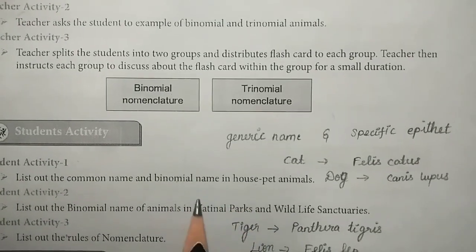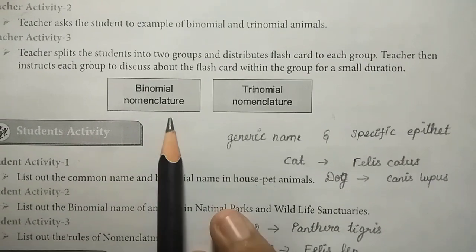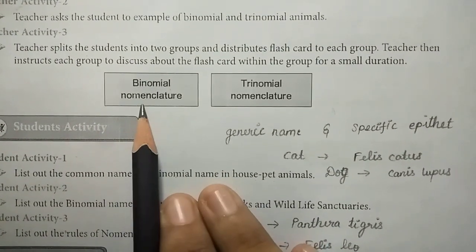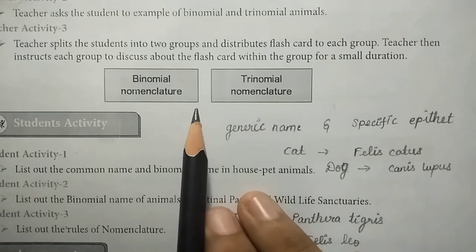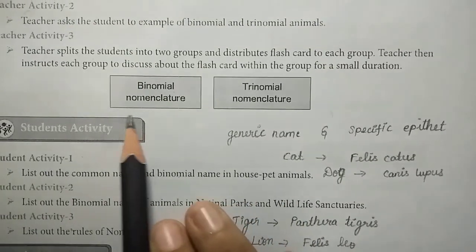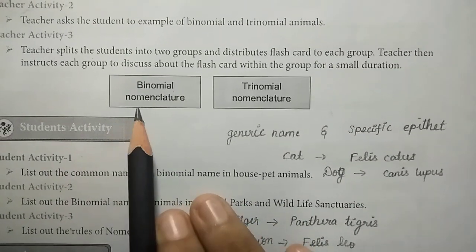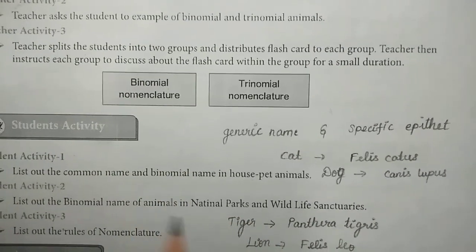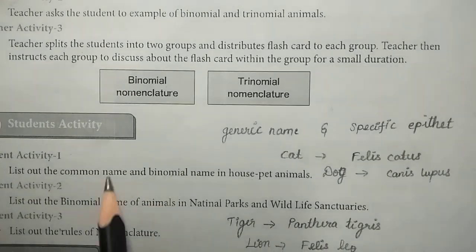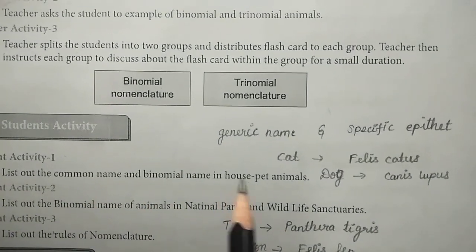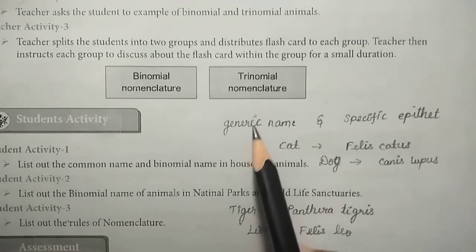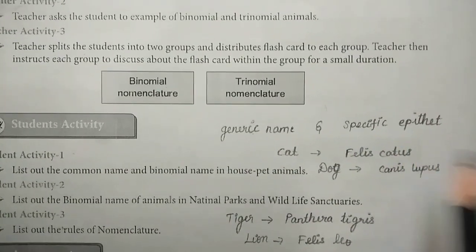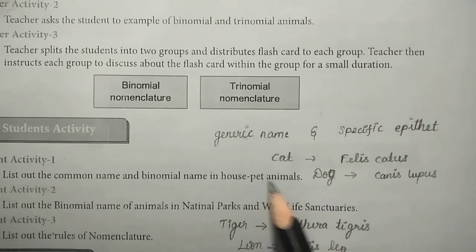The binomial name has two components: the generic name and the specific epithet. There are common names for house pet animals, and the generic name and specific epithet form the binomial name.